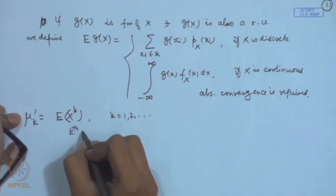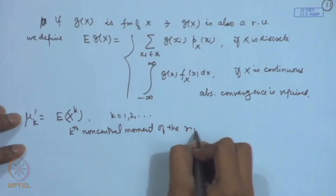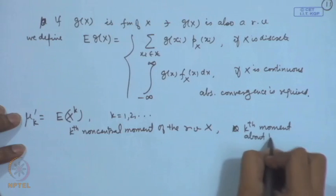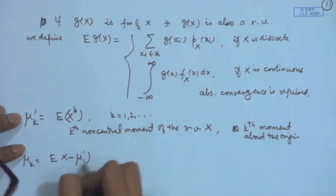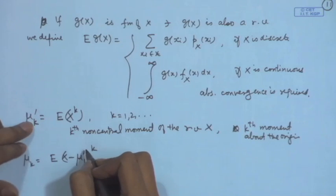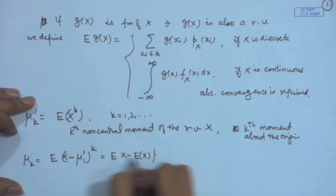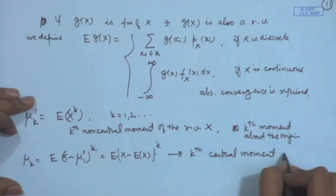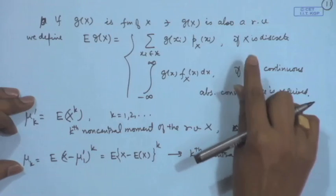Using this concept, for a function G(X) that is also a random variable, E(G(X)) = Σ G(x_i) p_X(x_i) if X is discrete, or ∫ G(x) f_X(x) dx if X is continuous — with absolute convergence required. We define μ'_k = E(X^k) for k = 1, 2, ... as the k-th non-central moment (k-th moment about the origin). We define μ_k = E((X − μ'₁)^k) as the k-th central moment of X, where μ'₁ = E(X).